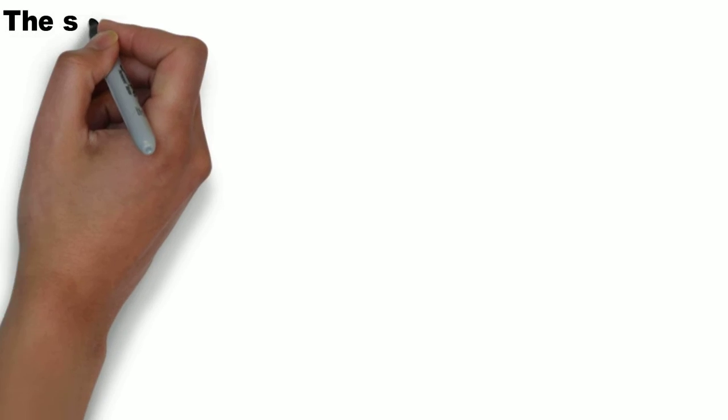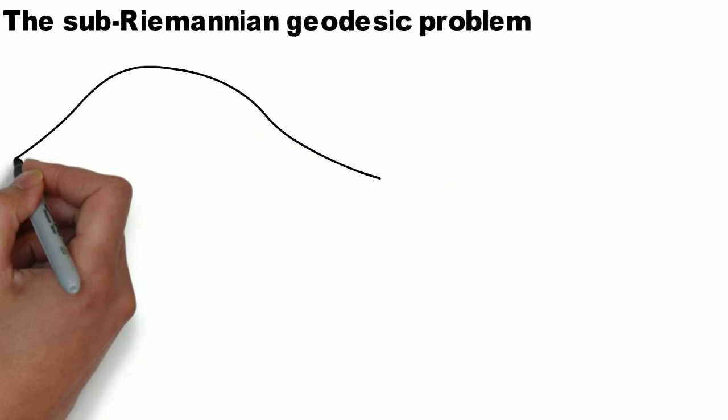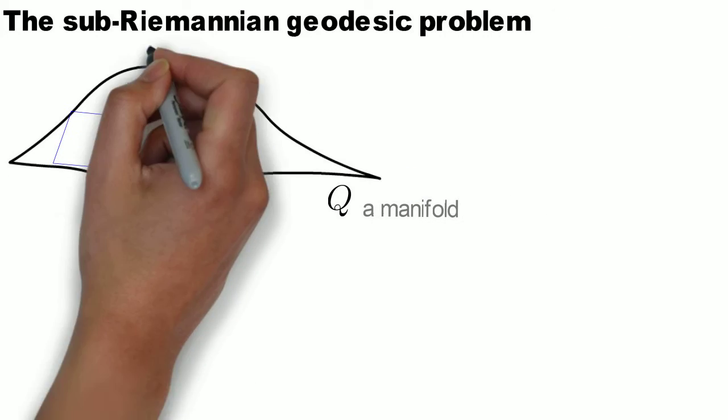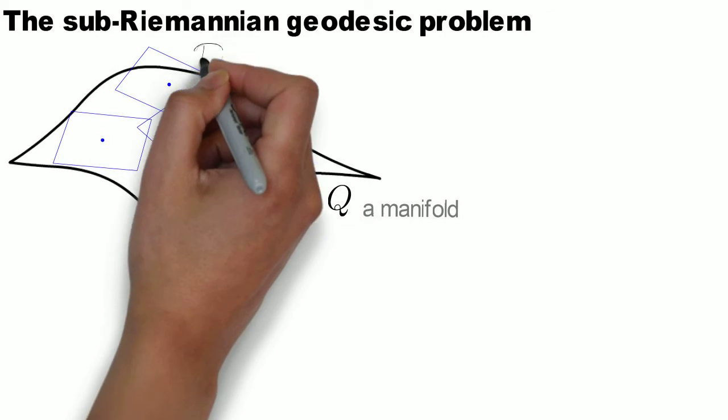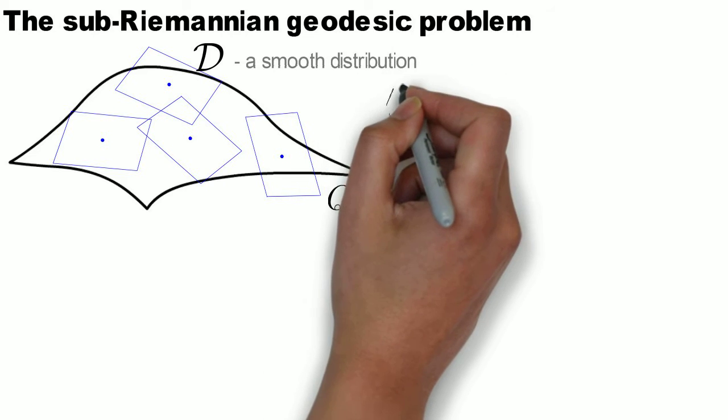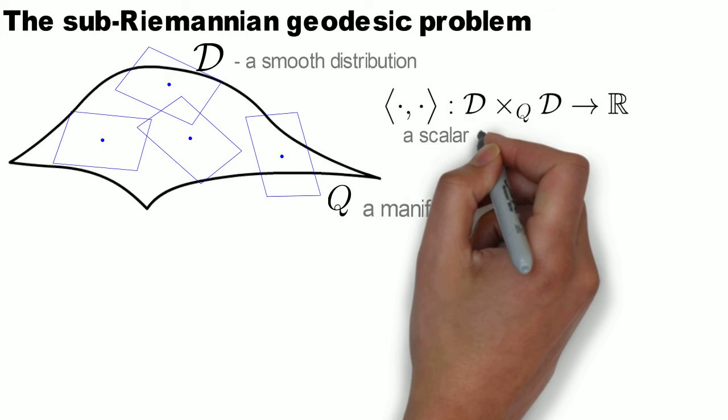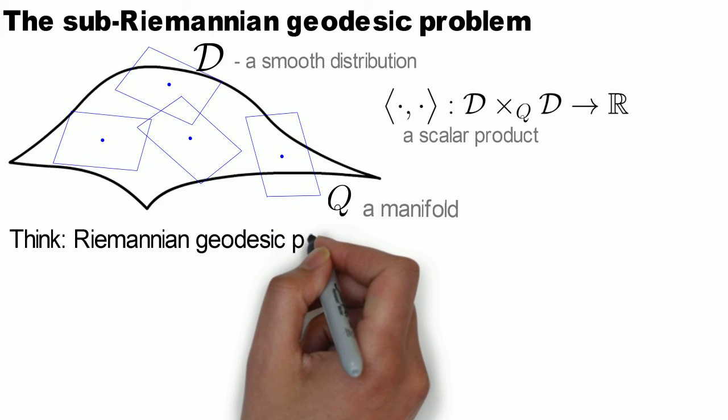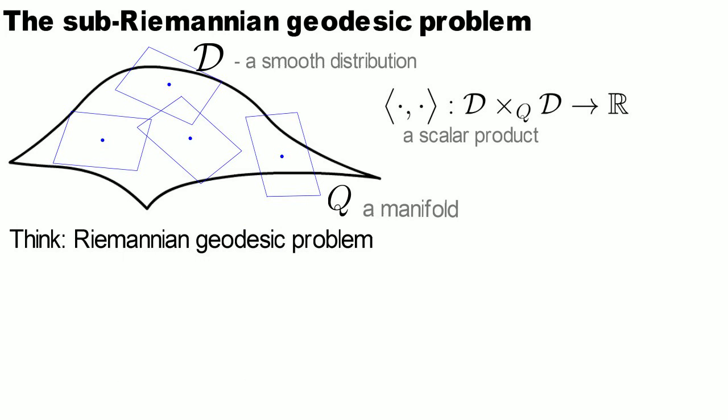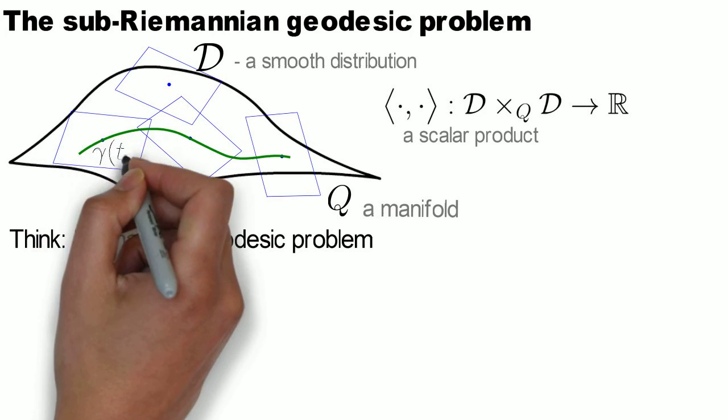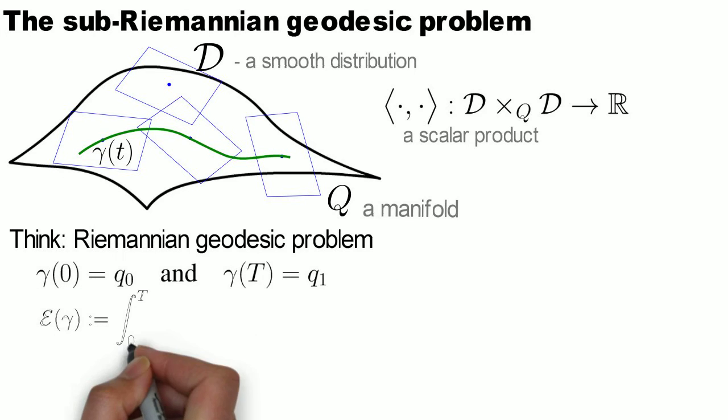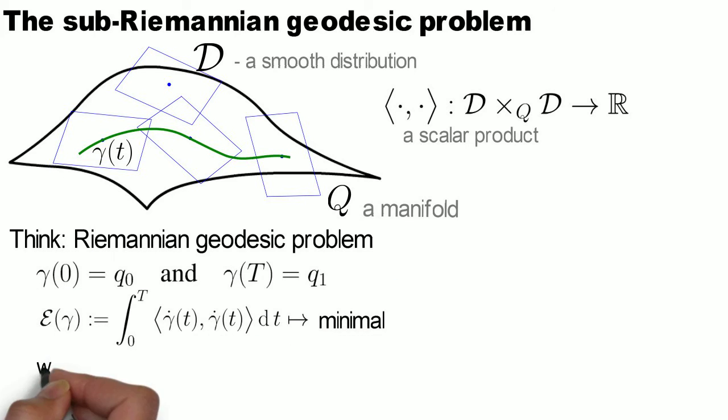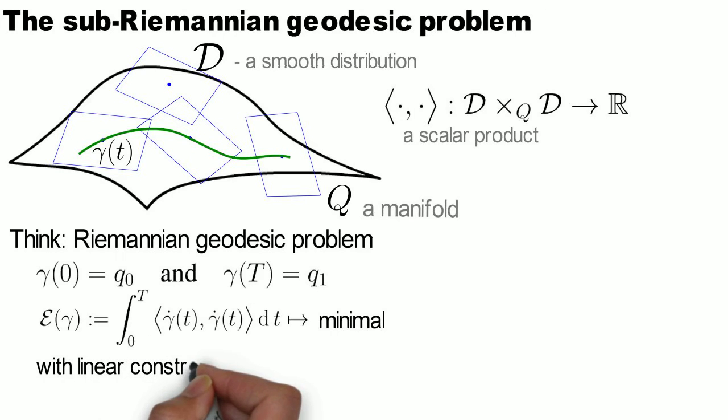Let us formulate the problem. We start with a manifold Q, a smooth distribution D on Q, and a positively defined metric on D. The problem we want to solve is basically the geodesic problem on Q with linear constraints given by D. That is, we look for curves on Q that join given two points in given time, minimize the energy functional, and at the same time remain tangent to the distribution D.